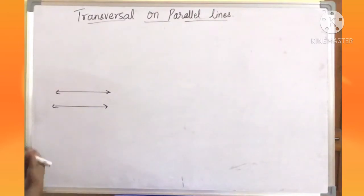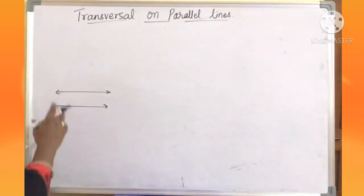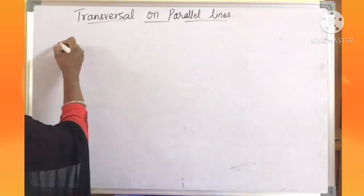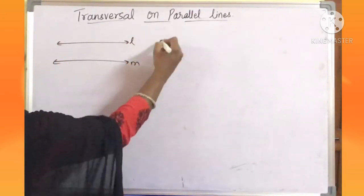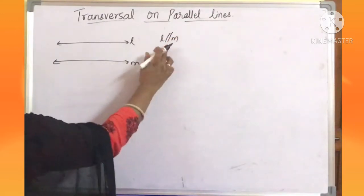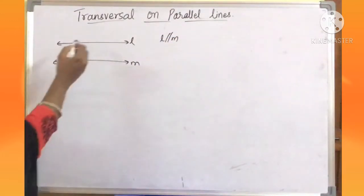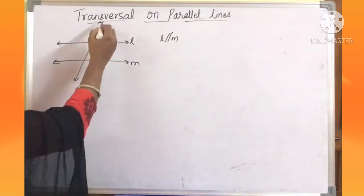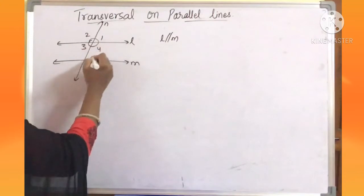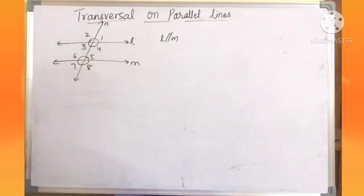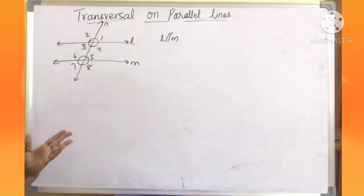Now let us look at transversal on parallel lines and the properties of angles on them. I am drawing two parallel lines — here they are parallel, meaning L is parallel to M, and you know the symbol of parallel lines. A transversal is intersecting these two parallel lines, so here eight angles are formed.